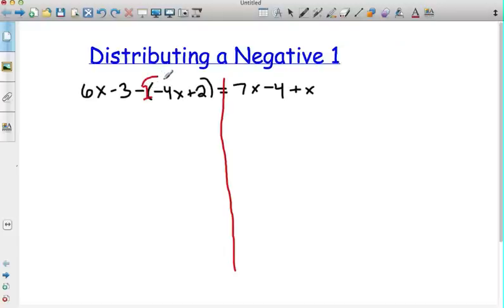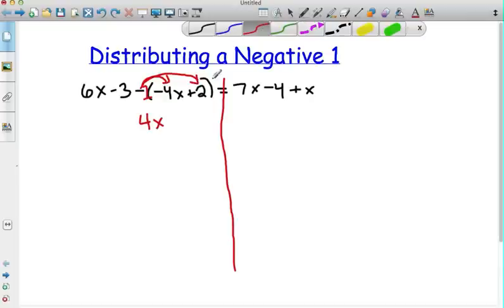So with distributing we need to make sure we go across with the rainbows going across and multiplying with both of those. So we end up with a negative 1 times a negative 4 which gives me a positive 4x, and then a negative 1 times a positive 2 gives me a negative 2. I chose to write it as plus a negative. The other way to write it if you'd like is to just keep it as a minus 2. That one would also be acceptable.